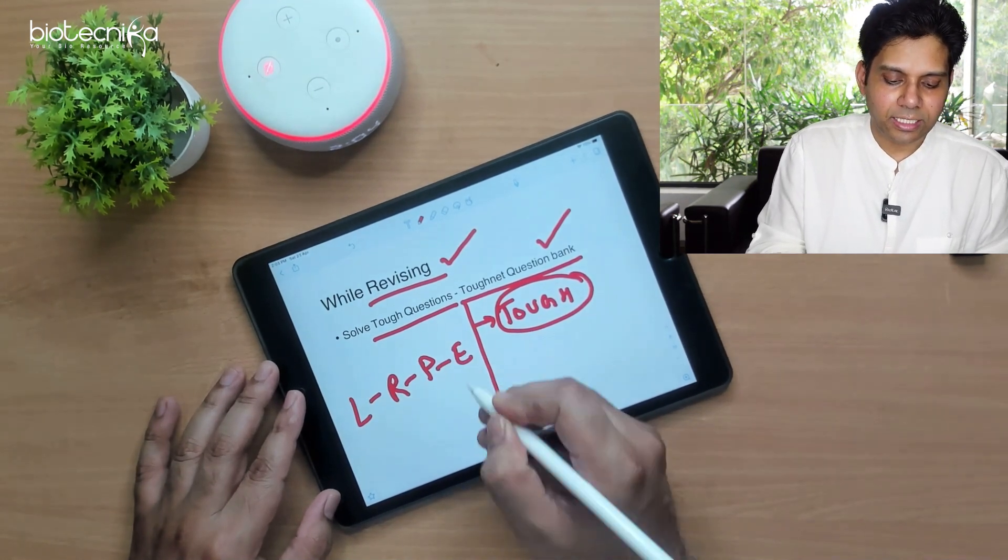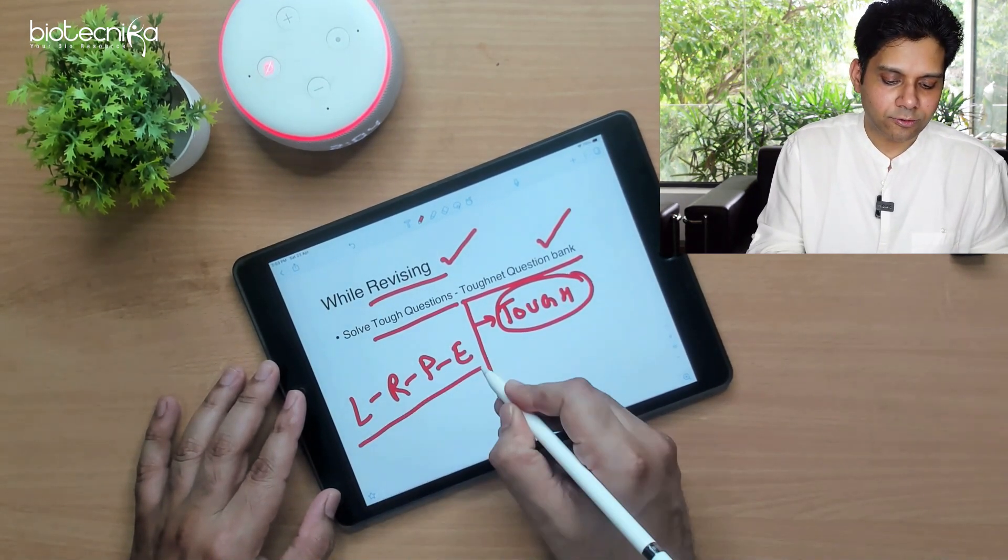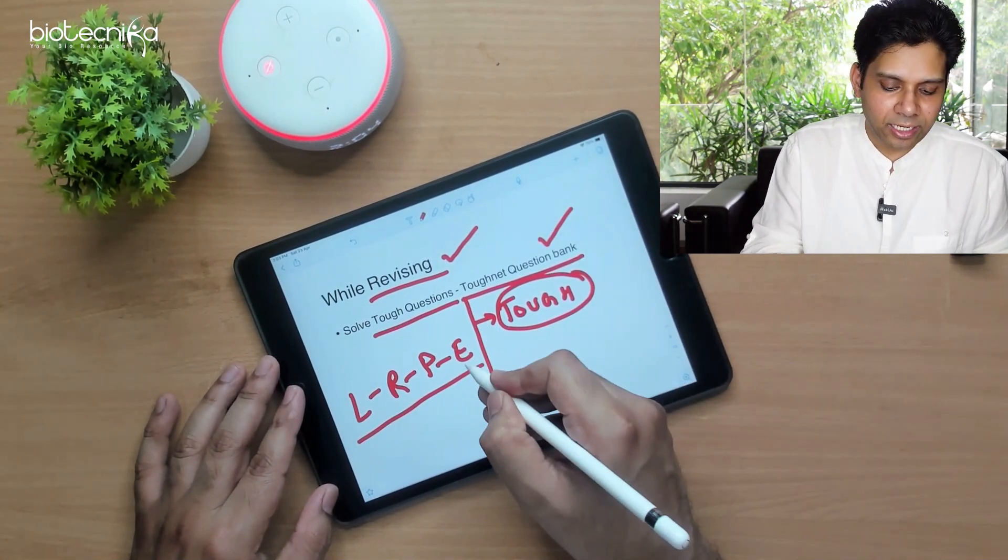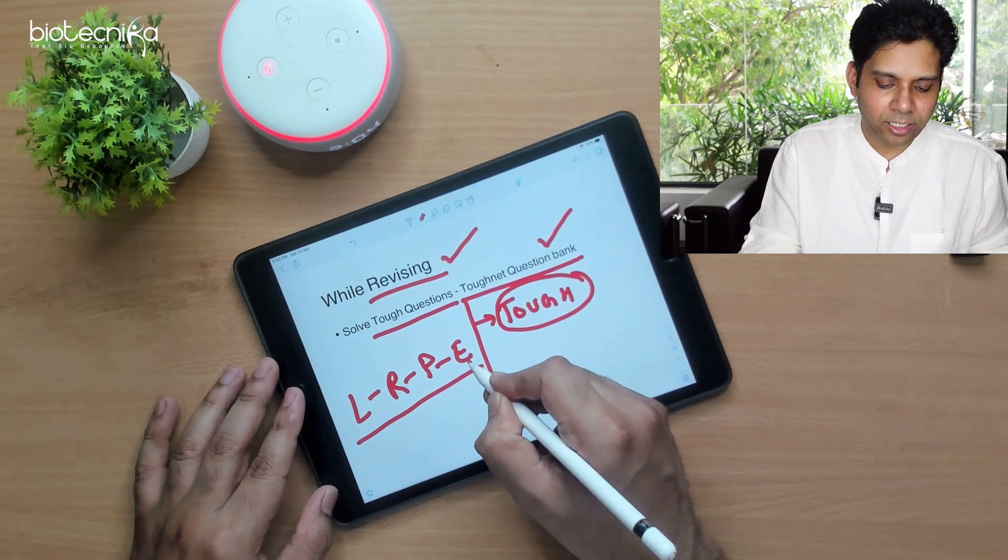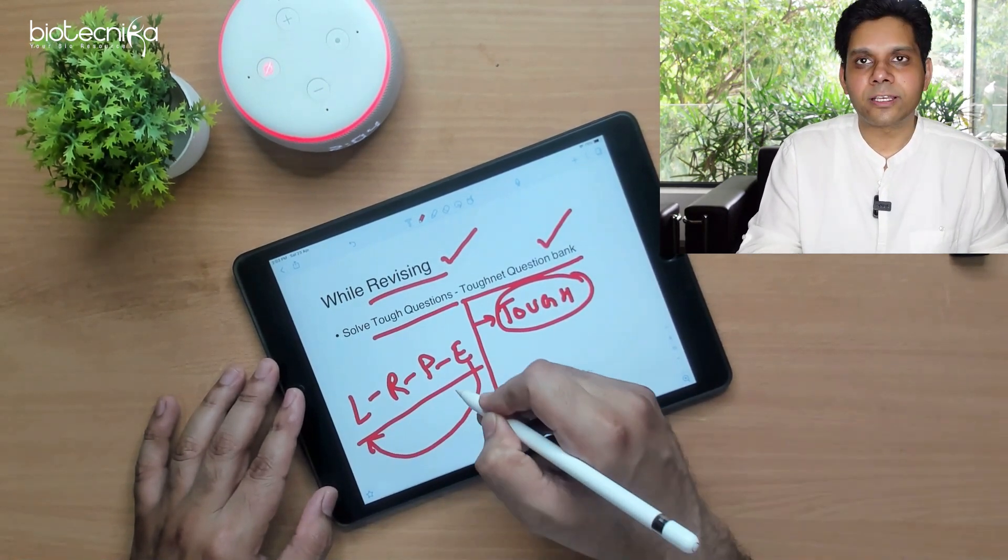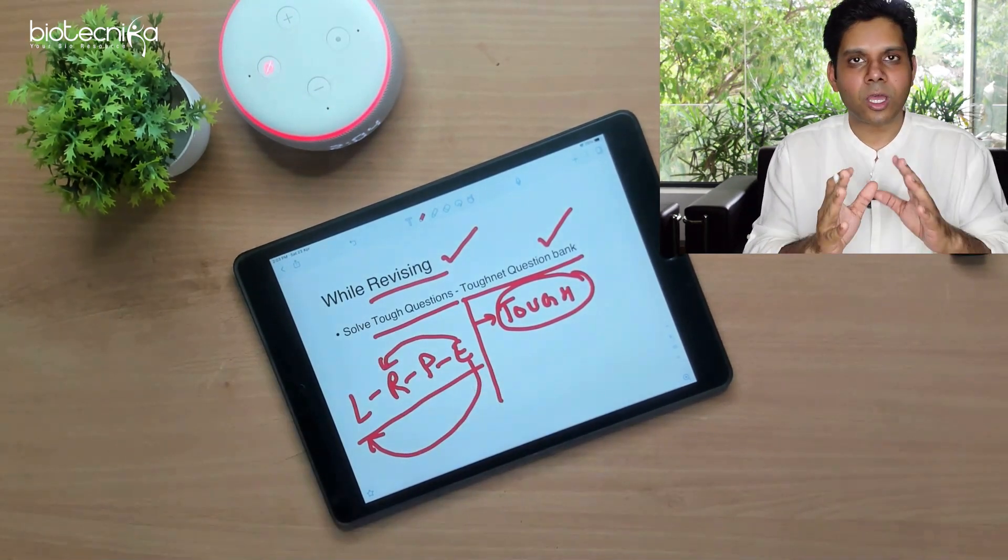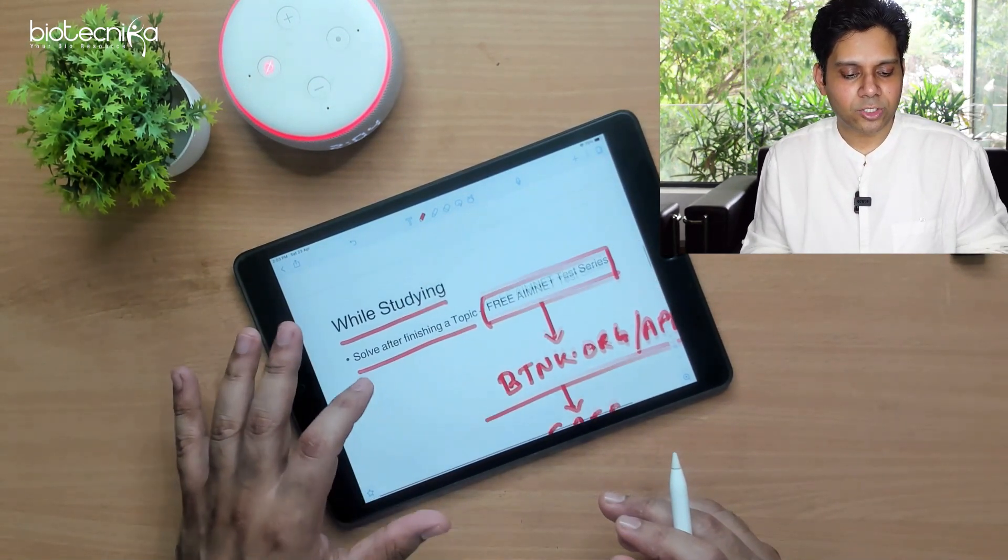What you have to do is learn, revise, practice, and after practice, evaluate. This is the formula you have to follow: LRPE. Learn, revise, practice, evaluate. If the evaluation does not come right, go back to the learning phase. If it is coming right but you are forgetting, then go back to the revision phase. This is how you go ahead with the previous question papers.